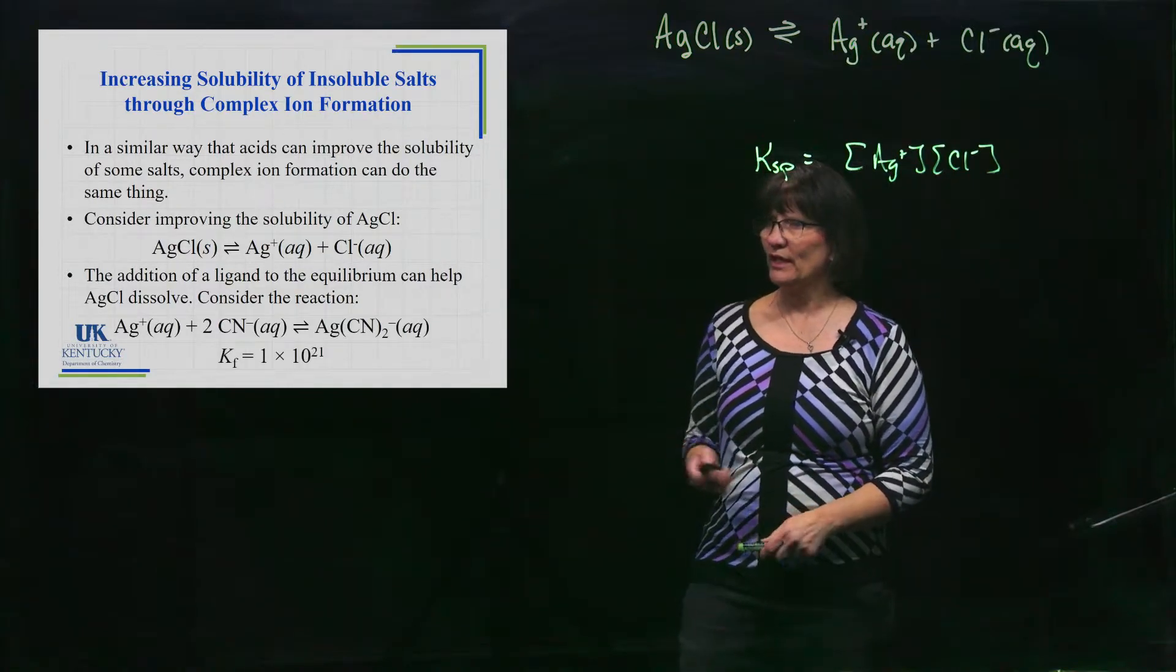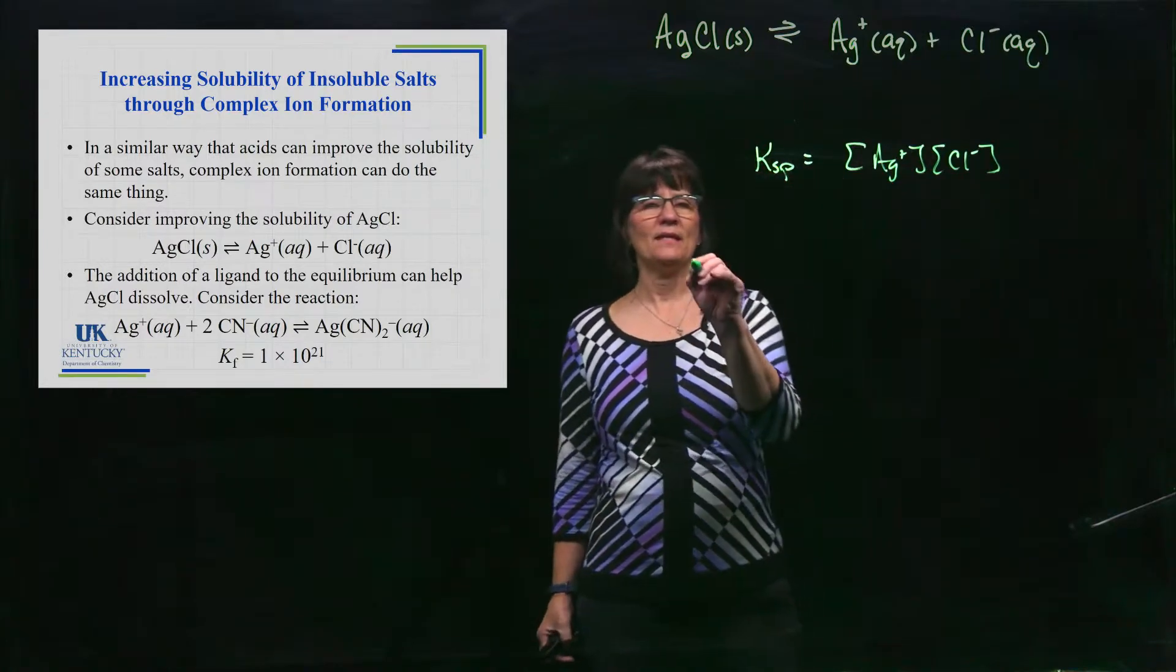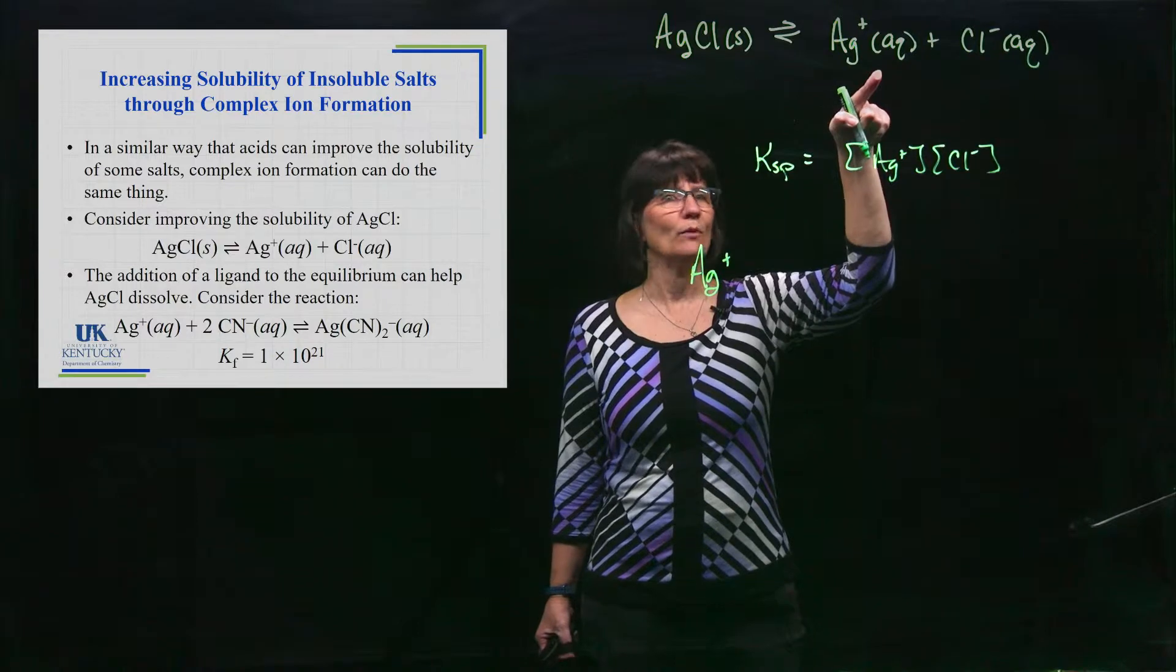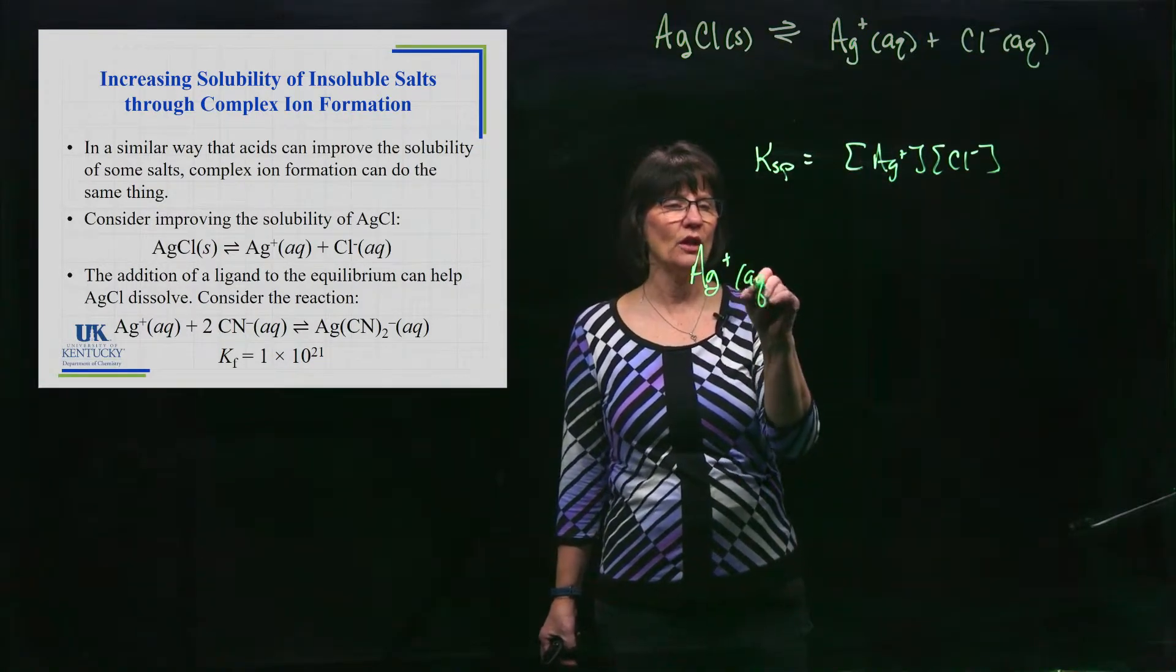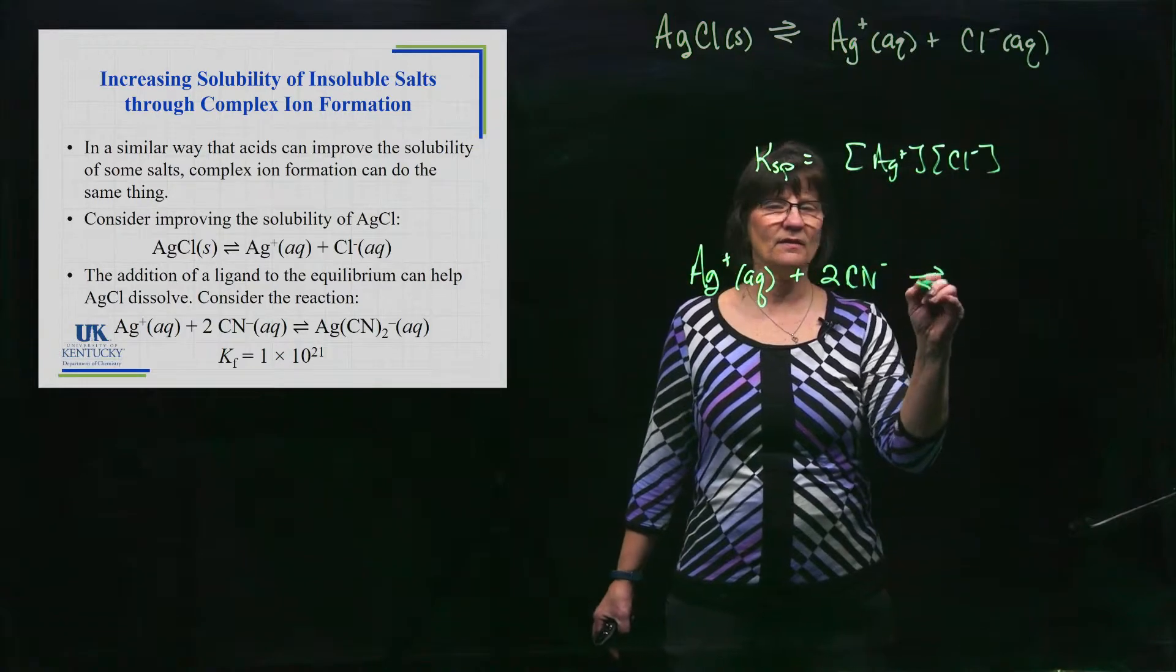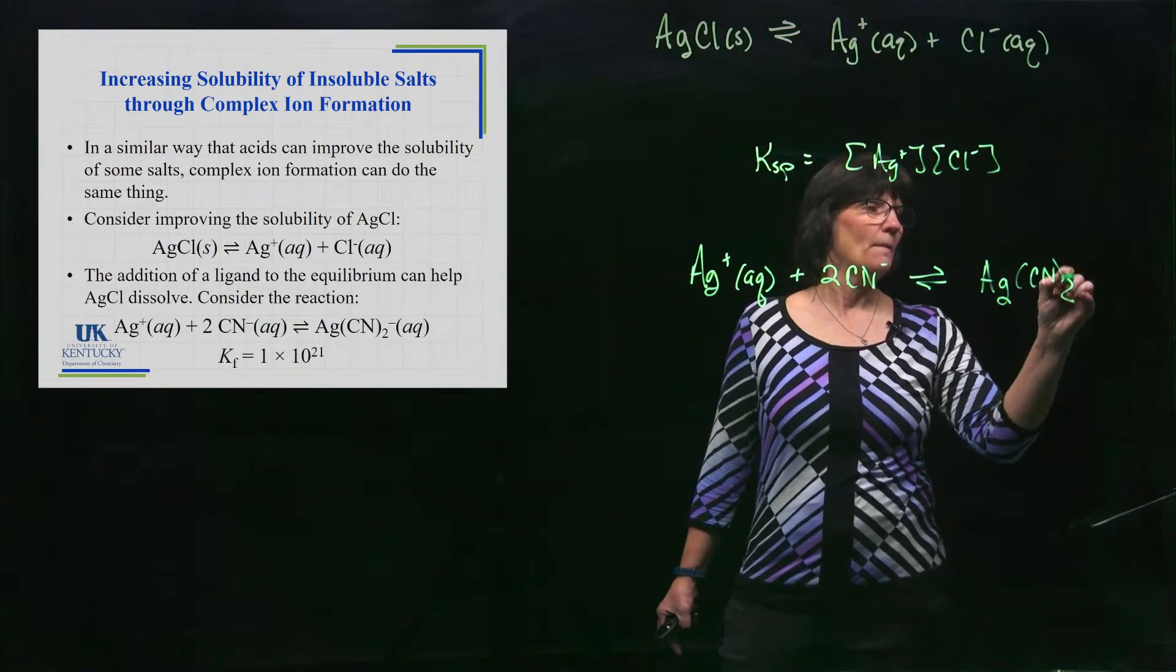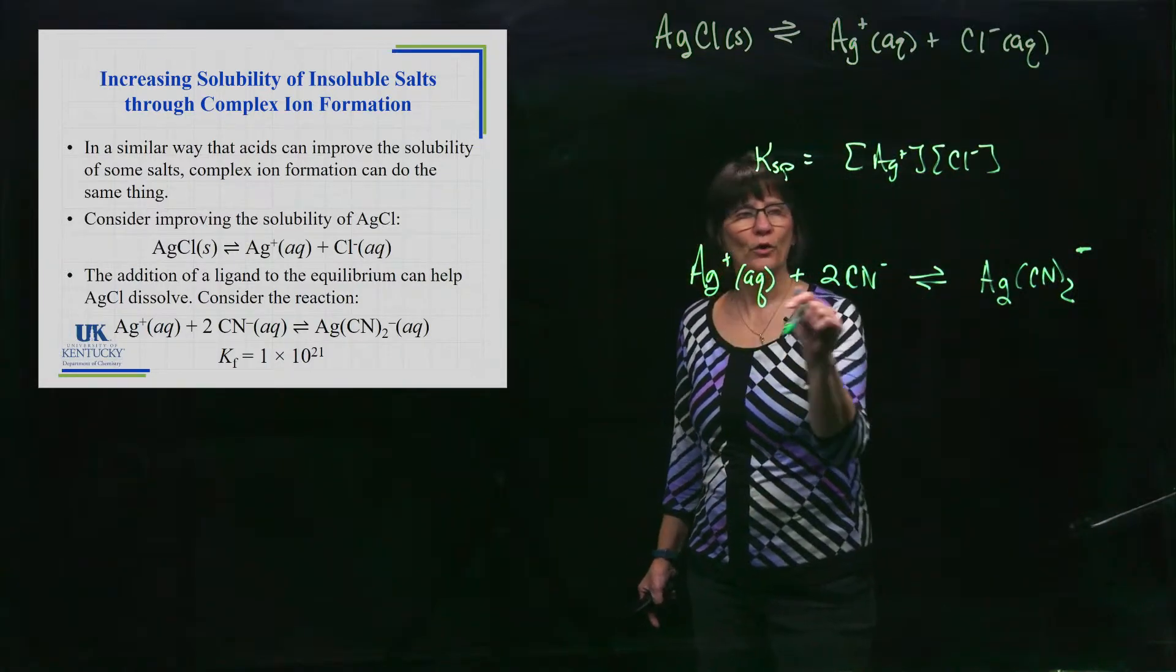So here is a ligand you could add. You could add the cyanide ion. And what happens is, the silver that we have floating around, and there's not very much of it, but there's some floating around in that solution, could then bind to the cyanide CN- and form this complex ion AgCN2-.